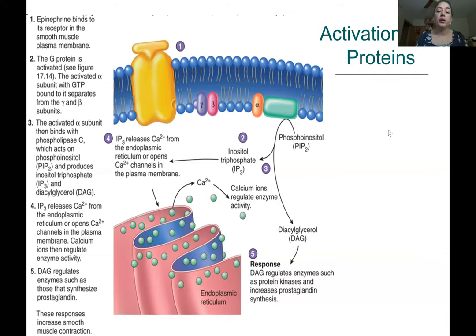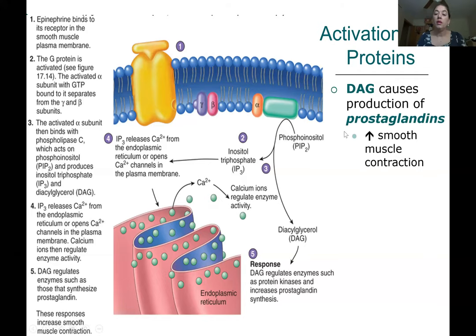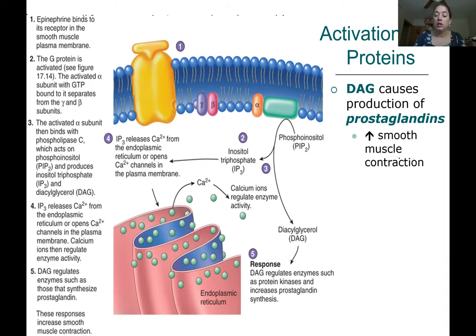Next example: activation of a G protein with epinephrine. DAG — diacylglycerol — causes the production of prostaglandins. When prostaglandins are released, it causes smooth muscle contraction. Remember, smooth muscle is not under voluntary control. For example, the uterus is smooth muscle, and the digestive system is lined with smooth muscle. Smooth muscle contractions can last a long time and are very strong.